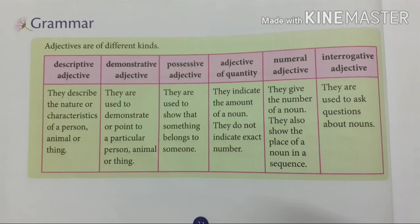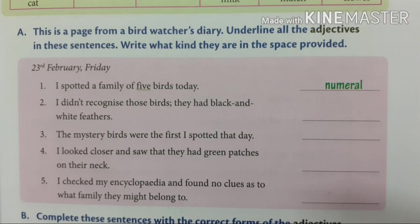Hope that you understood. Let's see some examples — some questions given in your textbook. Let's answer those questions. See the first one: 'I spotted a family of five birds today.' Which adjective is used here? Five — which is a numeral adjective. See the second sentence: 'I didn't recognize those birds. They had black and white feathers.'